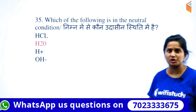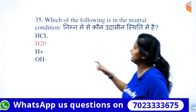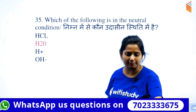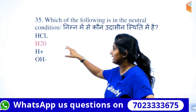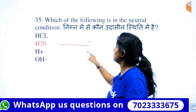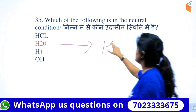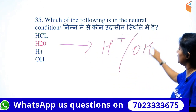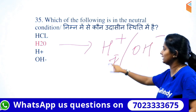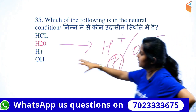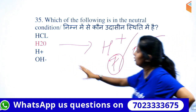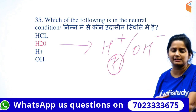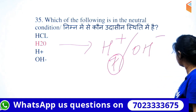Which is a neutral condition? HCl is not neutral — HCl is an acid. H2O is your neutral condition because H+ and OH- are equal, and its pH is also equal to 7. H+ and OH- alone are not neutral conditions.